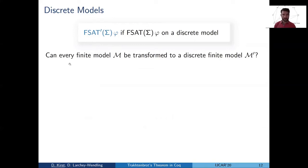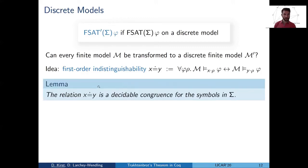And this relation is first order indistinguishability, which says that x and y are indistinguishable if x and y are elements of the domain of some model, if there's no formula and variable assignment that distinguishes them.